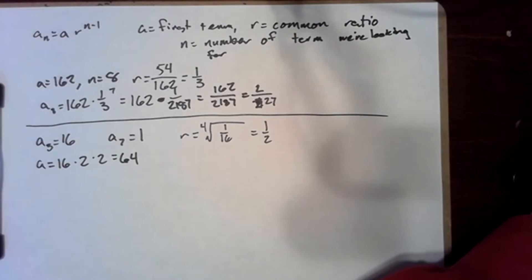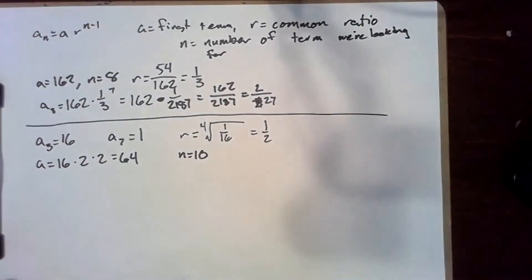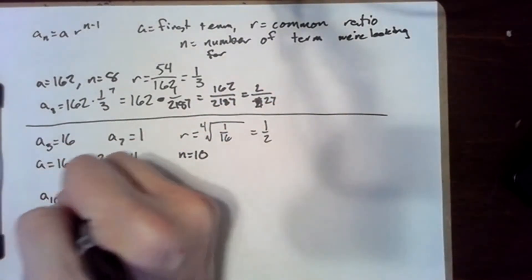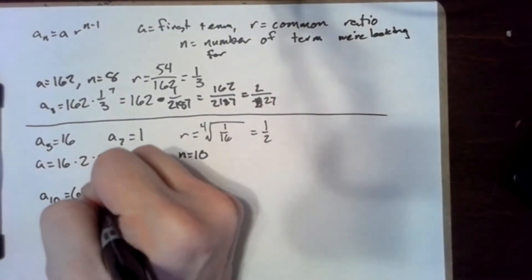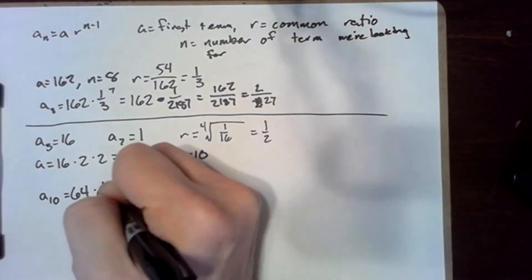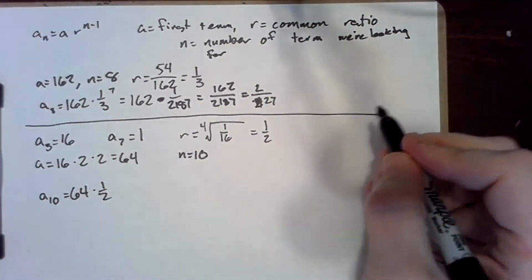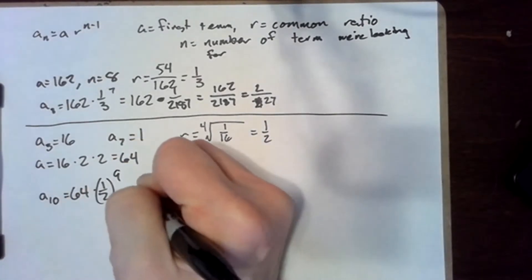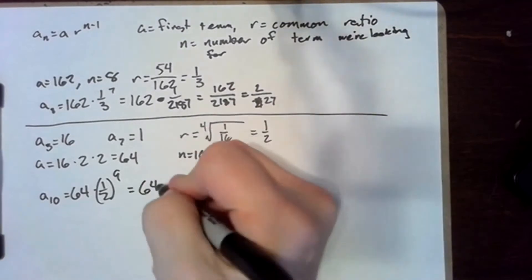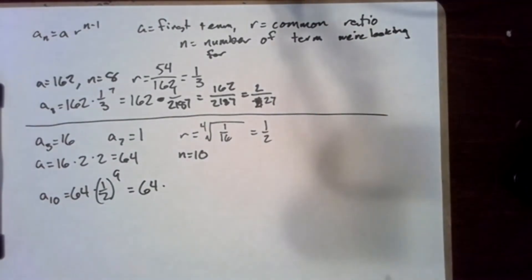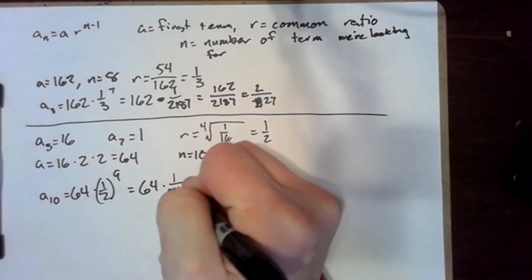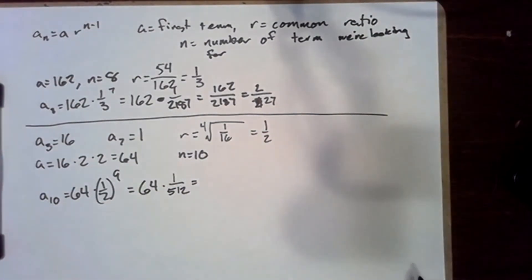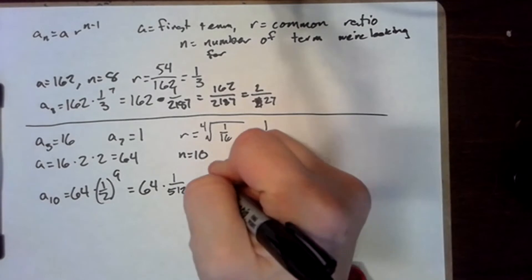We're looking for the 10th term. So we just follow our formula: A sub 10 equals 64 times one half to the 10 minus one, which is nine. 64 times—well, 2 to the ninth power is 512—so this is one over 512. 64 divided by 512 is one eighth.